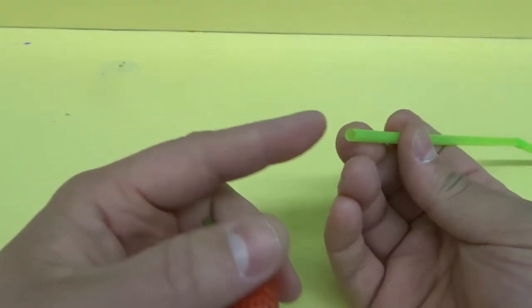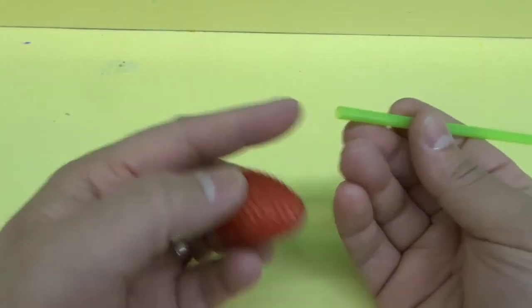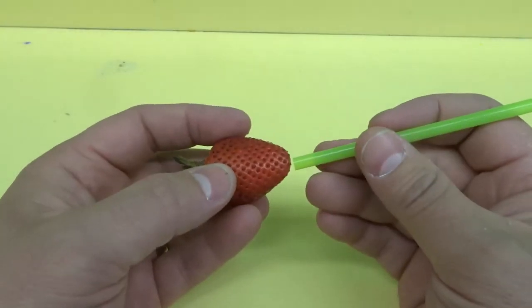So what you want to do is get a straw. You can use a bigger straw, but I'm just going to use a smaller one. And you can always do multiple passes if your straw is a little bit smaller than you want it to be for the core.